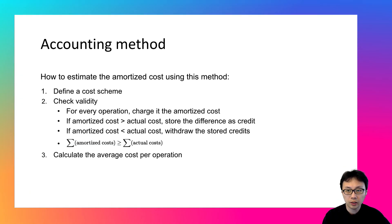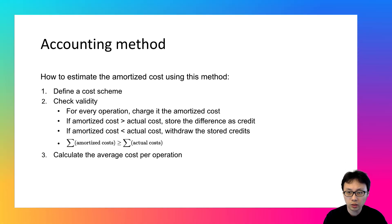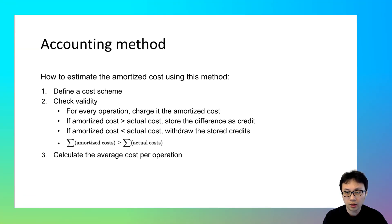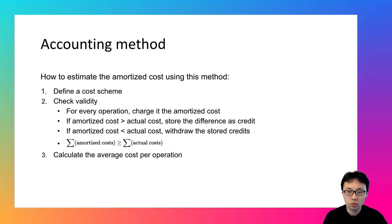The second step is to check the validity of the cost scheme you developed. When a sequence of operations are actually executed, it will charge each of them based on the scheme from step one — the amortized cost corresponding to its operation type. If the amortized cost is bigger than the actual cost, the operation is overcharged and we store the difference as credit in the bank account. If the amortized cost is smaller, we withdraw stored credits to mitigate the deficit. In the end, the total amortized costs must always be bigger than or equal to the total actual cost. Otherwise, you need to go back to step one to revise your cost scheme.